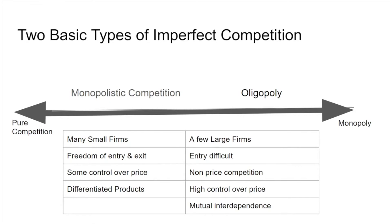Monopolistic competition is signified by a large number of relatively small firms. The definition of 'relatively small' is loose — a firm that's small in Ontario could be very large in Newfoundland. Small really means they don't have any real influence over the market. There's lots of freedom of entry and exit, some control over price, and they have differentiated products.